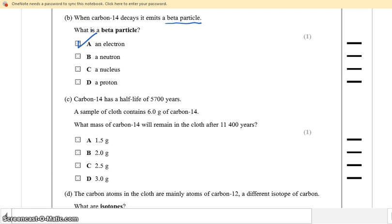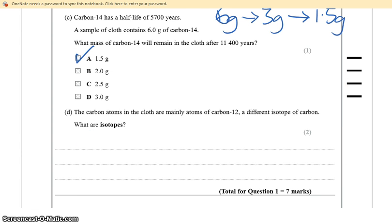Part C: Carbon-14 has a half-life of 5,700 years. If the sample contains 6 grams of carbon-14, what mass will remain after 11,400 years? We're going to start off with 6 grams. After one half-life, you have 3 grams - that takes 5,700 years. After another half-life, after a second half-life, you've got 1.5 grams, which is answer A.